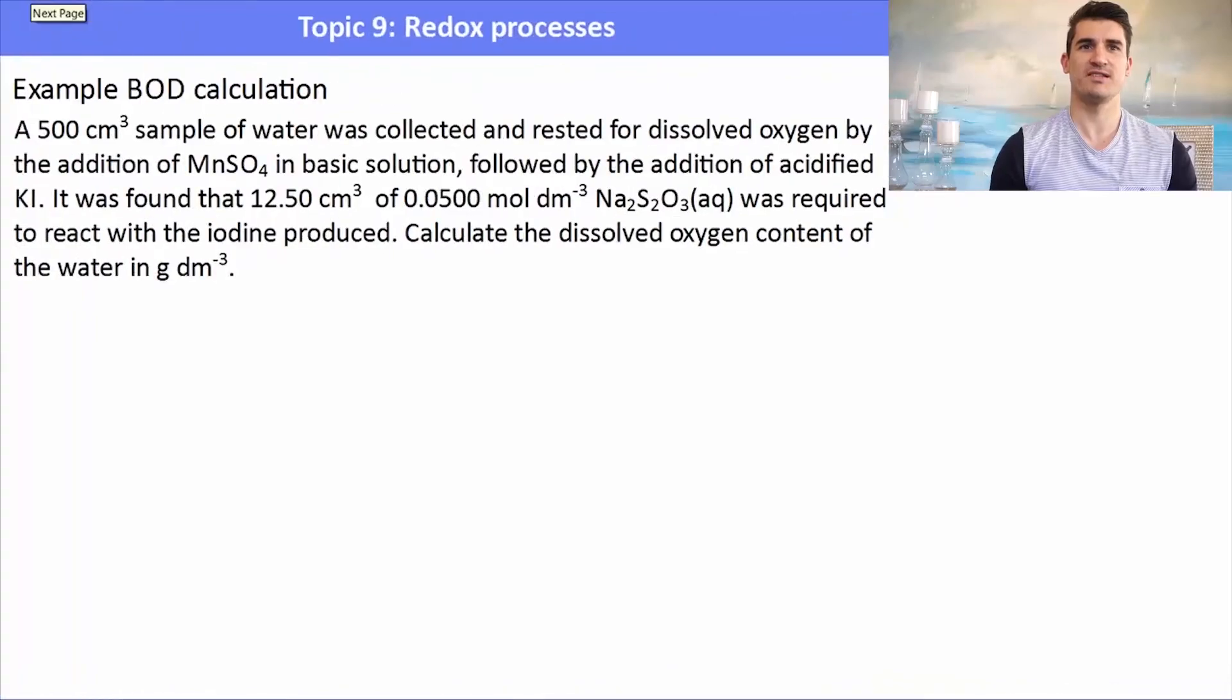So here's an example. A 500 cm³ sample of water was collected and tested for dissolved oxygen by the addition of MnSO4 in basic solution, followed by the addition of acidified KI. It was found that 12.5 cm³ of sodium thiosulfate was required to react with the iodine produced. Calculate the dissolved oxygen content. Now they haven't given you the formulas, but they do want you to know the relationship. So where do we start?